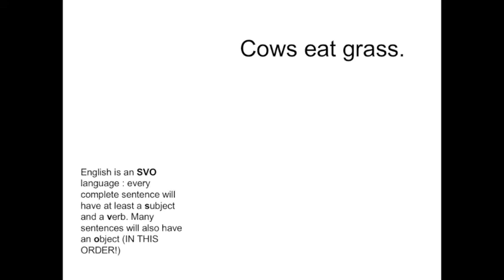One of the things that's quite handy to keep in mind when writing is the fact that English is what's known as a subject, verb, object language. What this means is that every complete sentence in English will have at least a subject and a verb, and in most cases a sentence will also have an object, and they appear in this order: subject, verb, object. In some languages you can move the elements around, or you might be required to place an ending on certain elements to indicate what the subject, verb, and object are. But in English, it's determined by the order of the words.